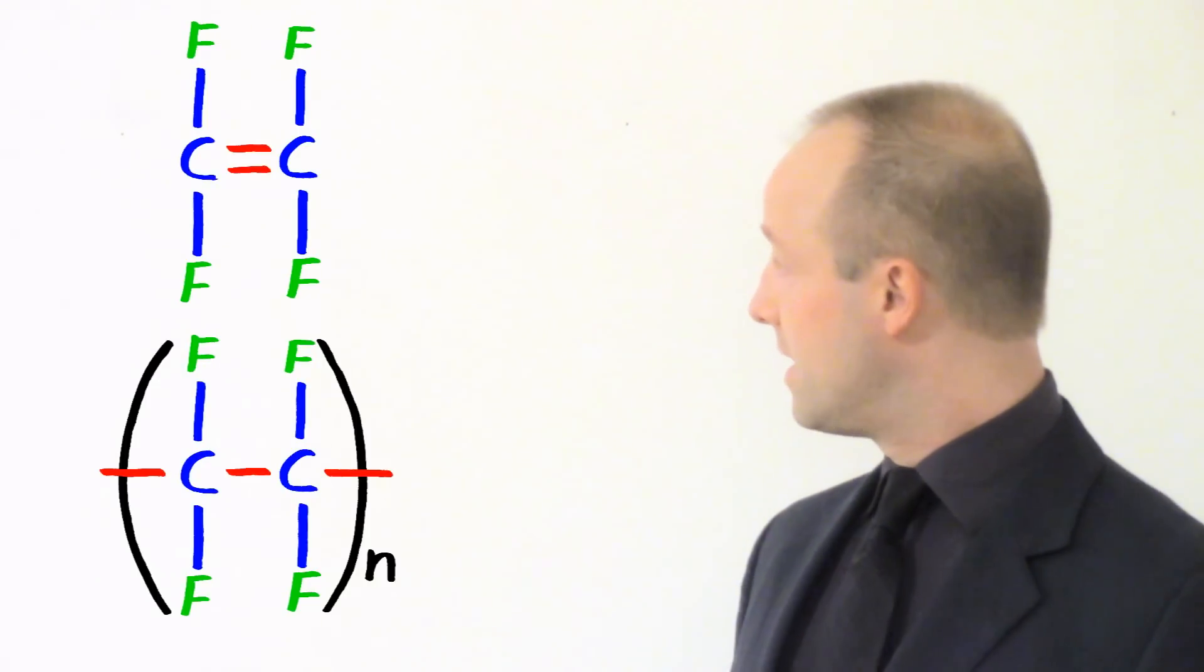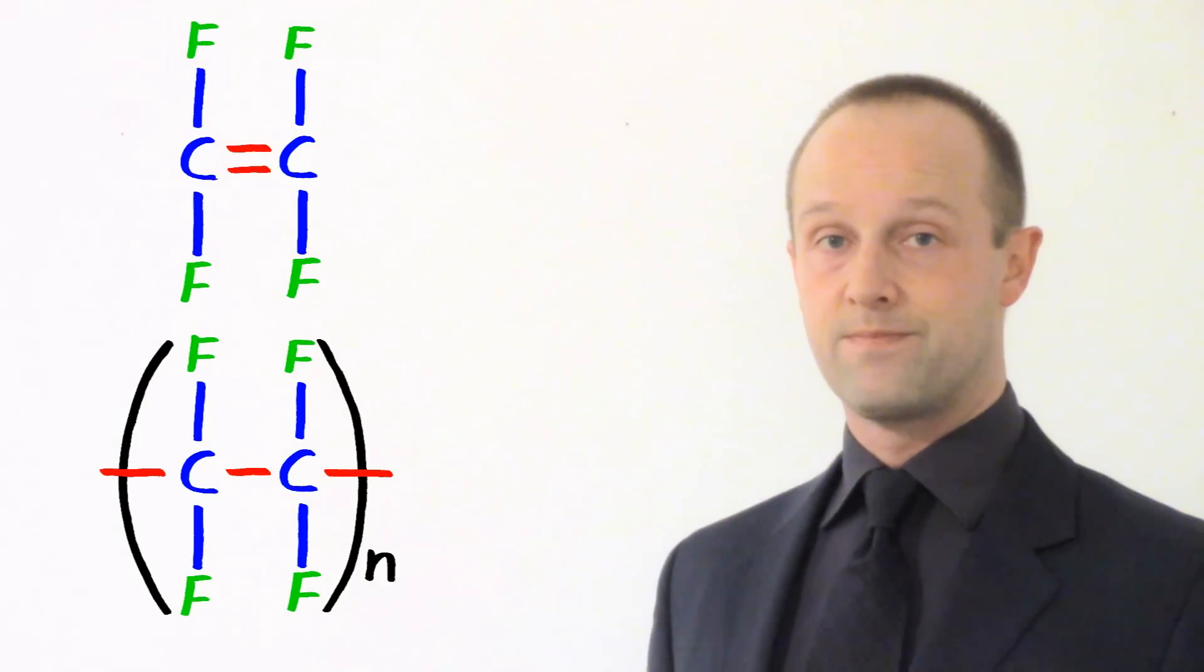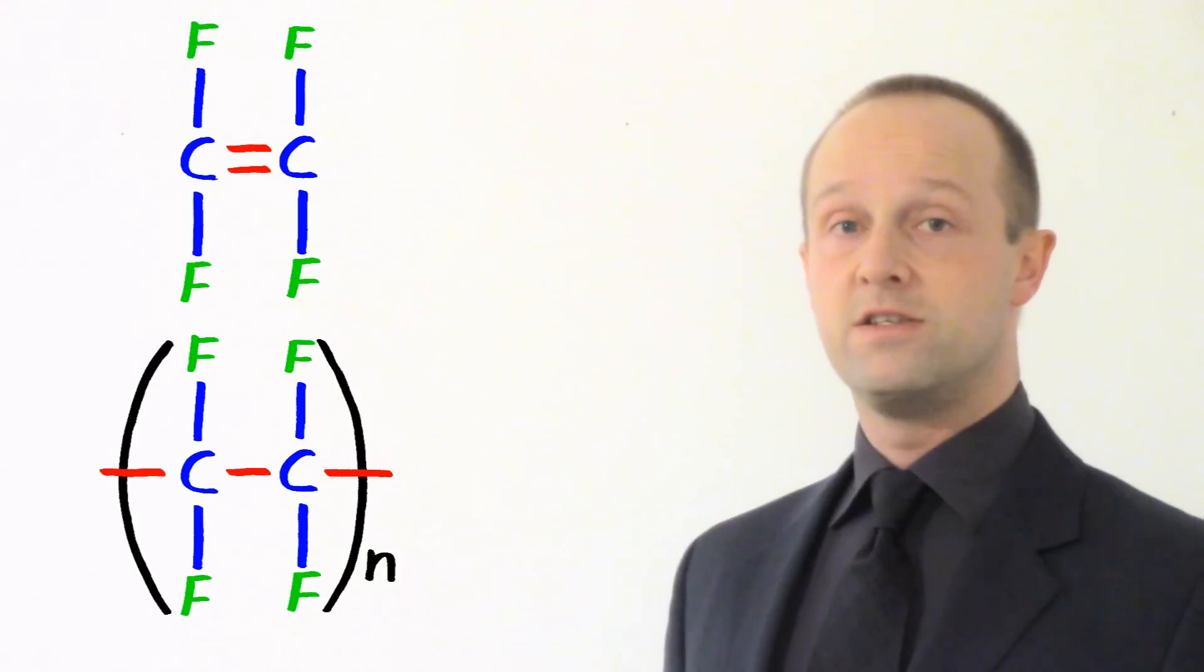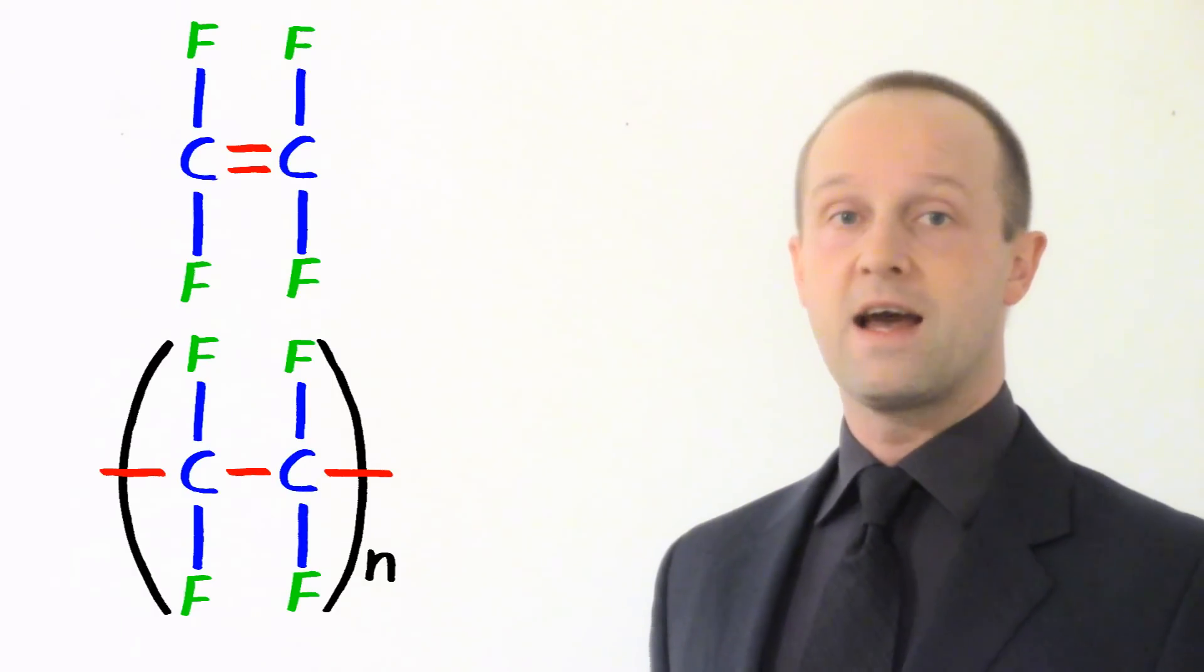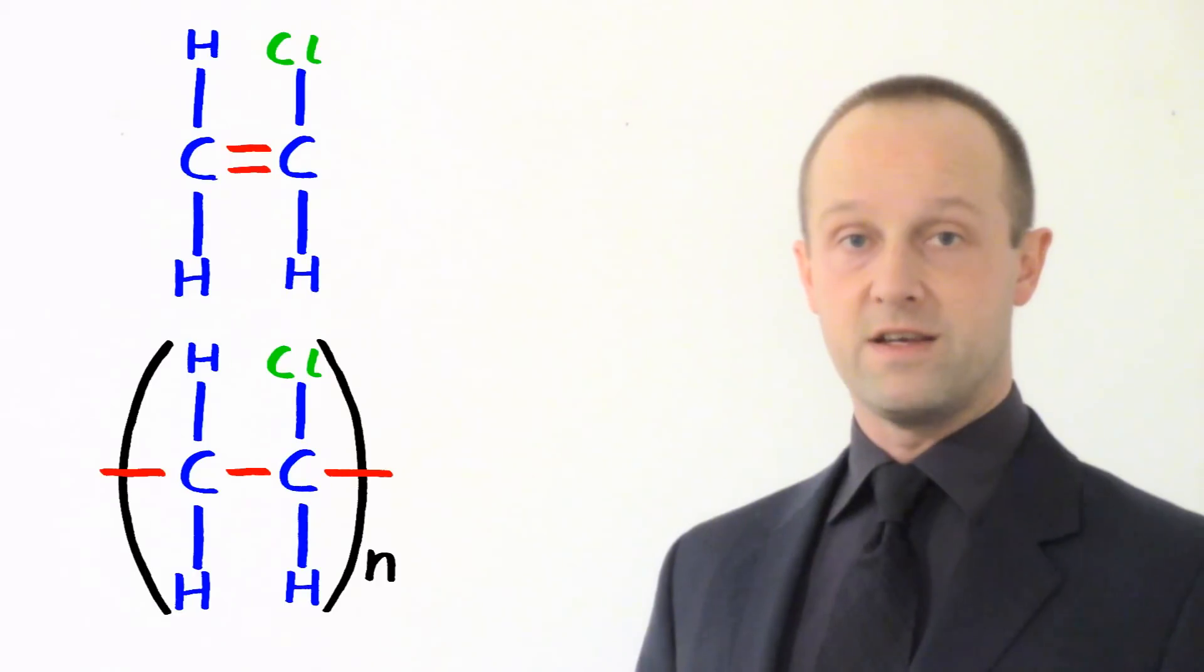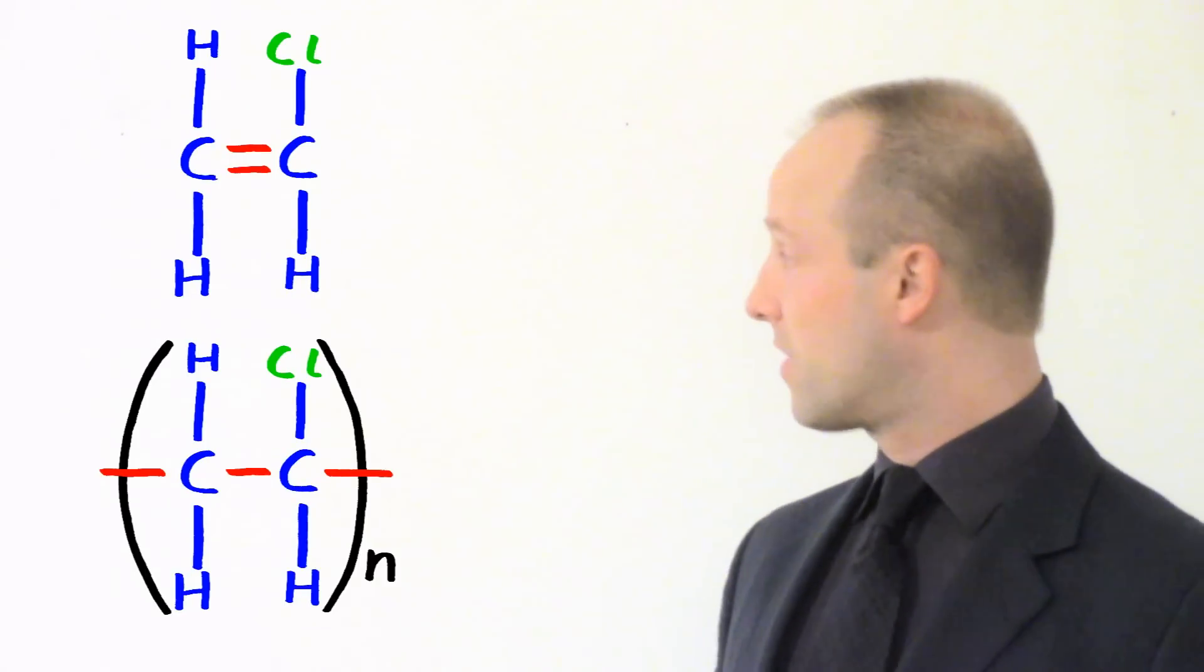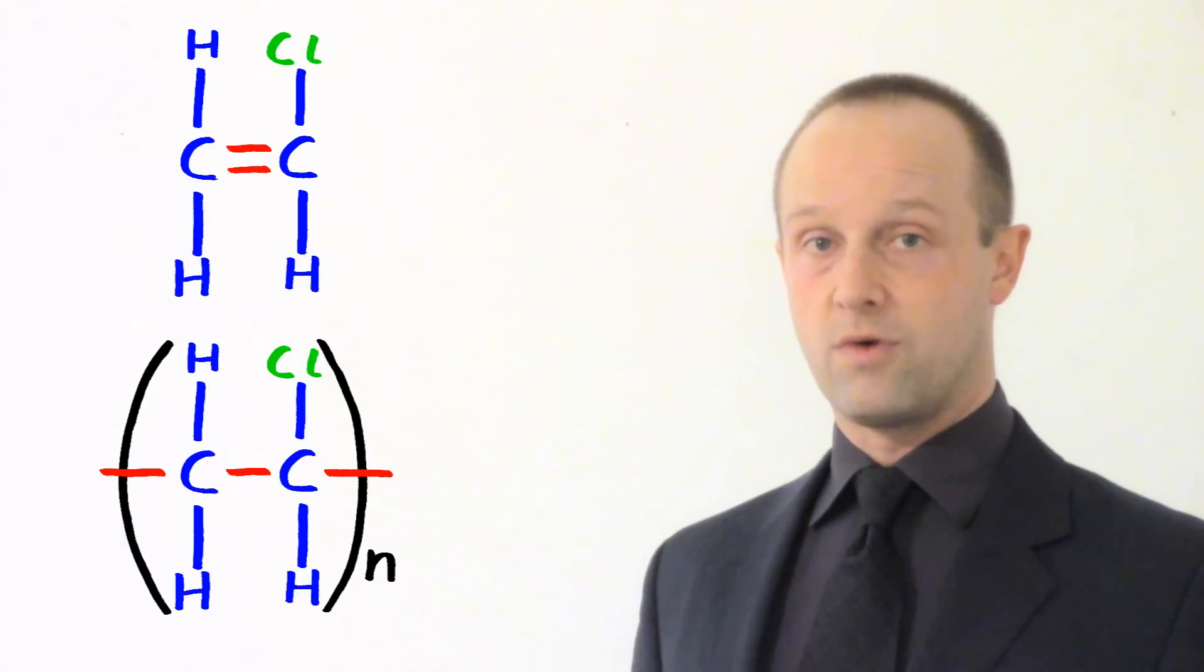Another one here is polytetrafluoroethylene or PTFE. And instead of the H's, you can see that we've got F's for fluorine atoms. Again, otherwise, pretty much the same sort of thing. Finally, PVC. And again, you're starting to get the idea here, I expect. But we've got a chlorine atom on there instead of one of the hydrogens.